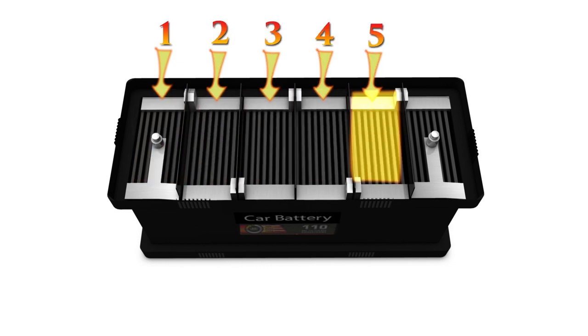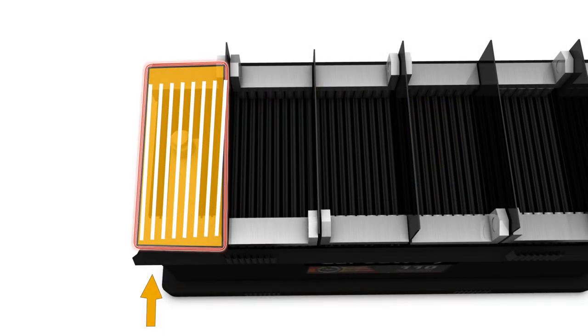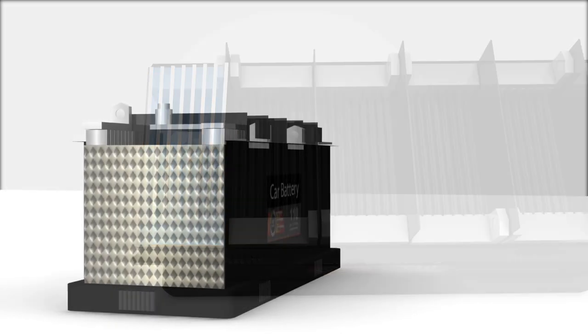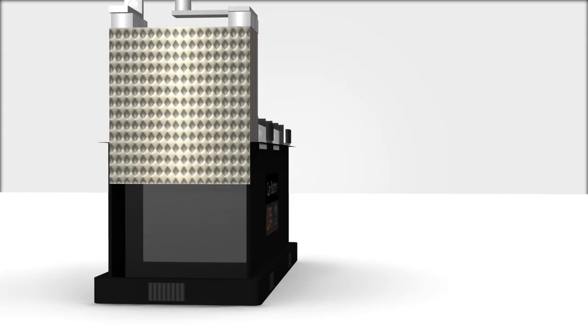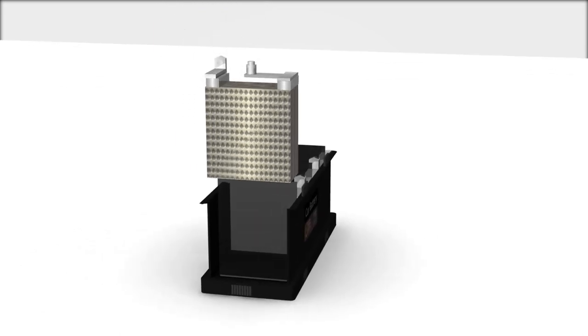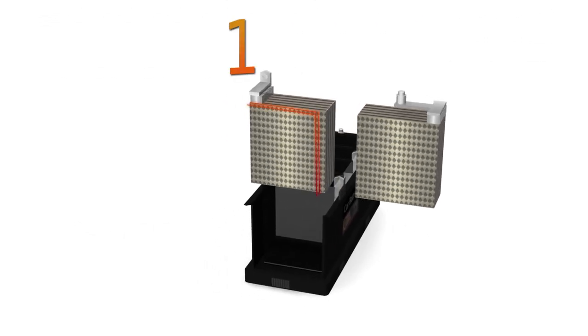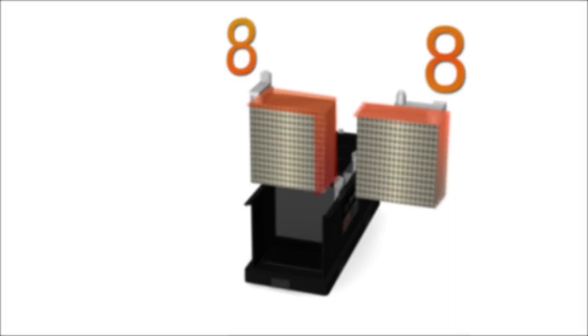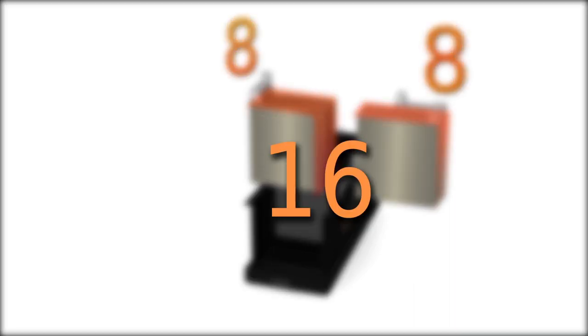In each cell there are a total of 16 lead plates. The positive plates, of which there are eight, are coated in an active layer of lead dioxide PbO2, and the remaining eight negative plates are covered in an active layer of sponge lead. Together the plates create a compact grid. The bigger the surface of the grid, the more power the grid generates.